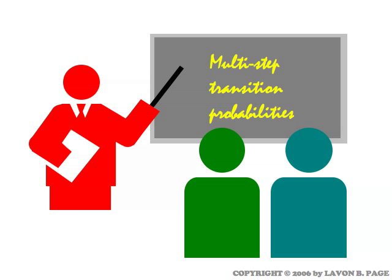This video takes over right where we left off in the previous one. In the last video, we talked about two-step transition probabilities. This video treats multi-step transition probabilities, which means any number of steps.